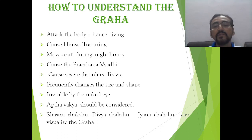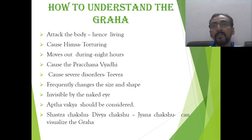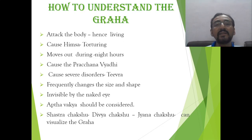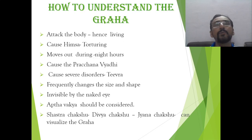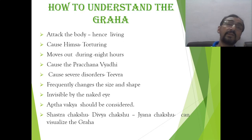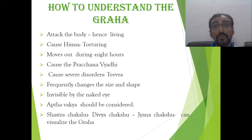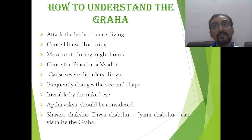Shastra Chakshu, Divya Chakshu, and Jnana Chakshu are the three things which can make grahas visible. These are some of the important points regarding grahas. By looking at this, it is clear that grahas are living objects. Grahas have antigenic property. Grahas like the dark atmosphere. Grahas cause hidden disease. Grahas cause high mortality and morbidity rates. Grahas are able to change their size and shape frequently according to the situation. Grahas are not visualized by the naked eye; special visual power is required.